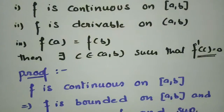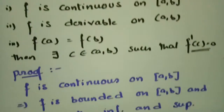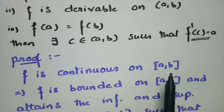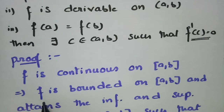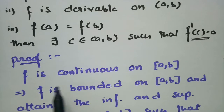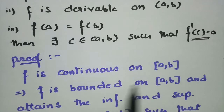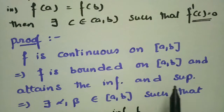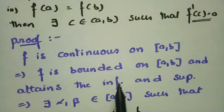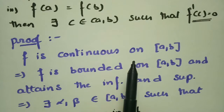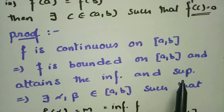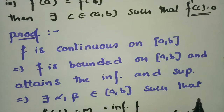In the proof, the first point given is that f is continuous on closed [a,b]. If f is continuous, we can say this implies that f is bounded on [a,b]. There is a theorem: if f is continuous on closed [a,b], it implies f is bounded on closed [a,b] and attains its infimum and supremum.